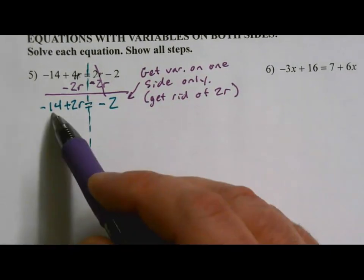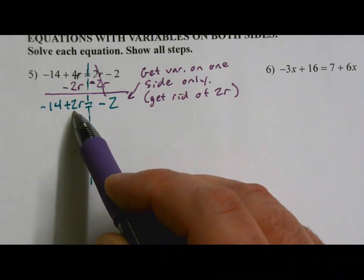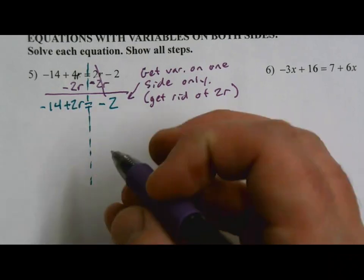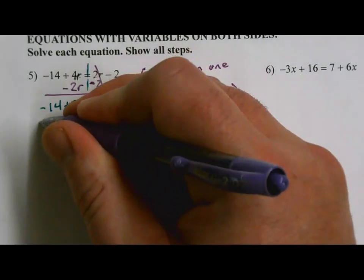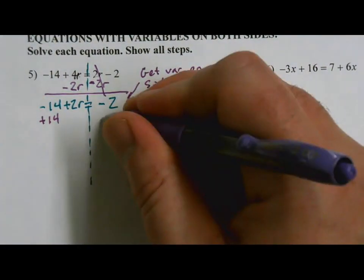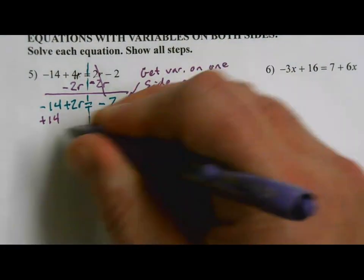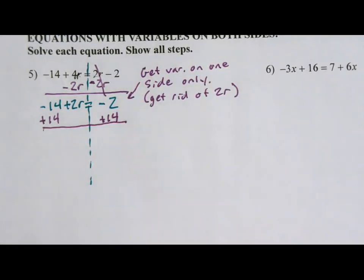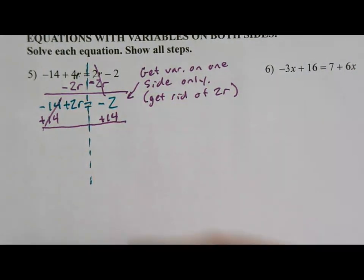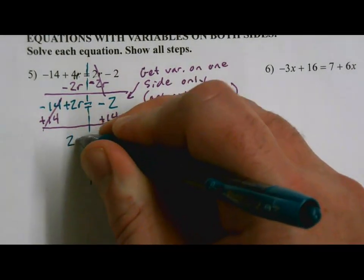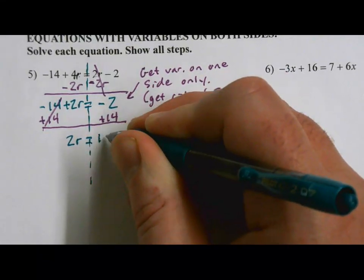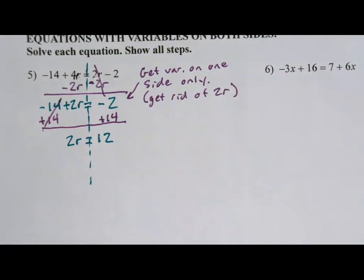I need to get rid of the negative 14 and I need to get rid of this 2. I'm going to save the 2 for the end because it's multiplying. Let's deal with addition and subtraction first. That's a minus 14, so I can make it go away by going plus 14. But I need to do that on both sides of my equation. Minus 14 plus 14, those are going to cancel. Now I have 2r. I've got an equals. Negative 2 plus 14 is positive 12.